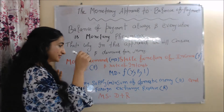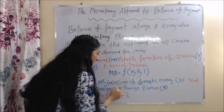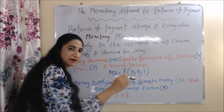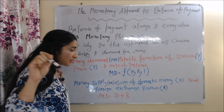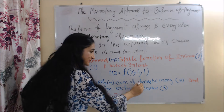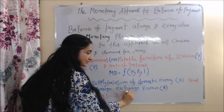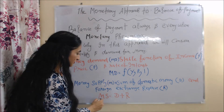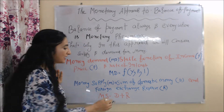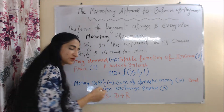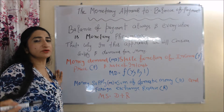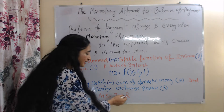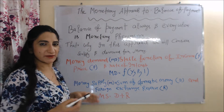Money supply is the sum of domestic money and foreign exchange reserve. In this equation, MS is money supply, D is domestic money or domestic credit, and R is foreign exchange reserve.